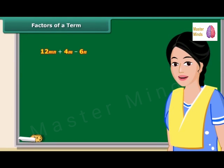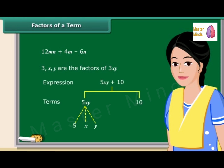A term is a product of its factors. For example, 3, X, and Y are the factors of the term 3XY. We can also represent 5XY + 10 by a tree diagram, where dotted lines are used for factors and continuous lines for terms. Remember, the factors cannot be further factorized.